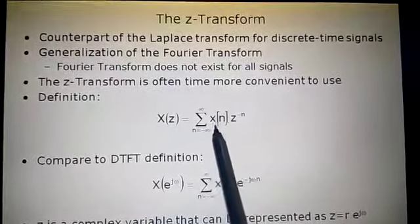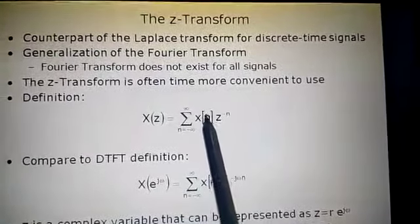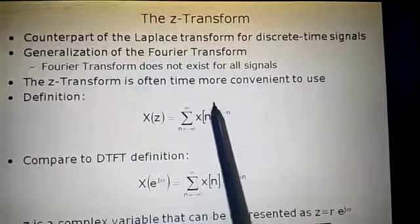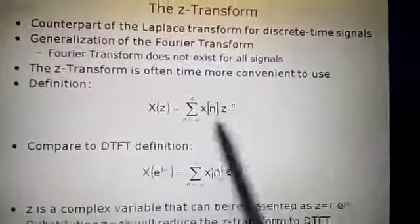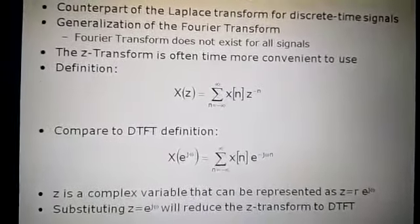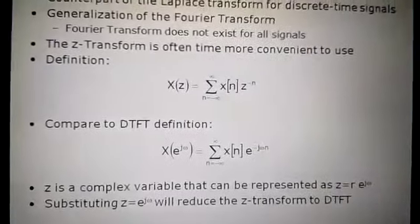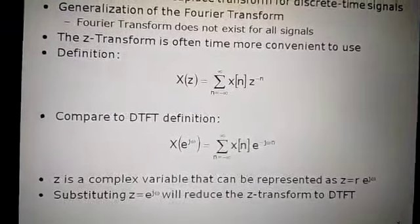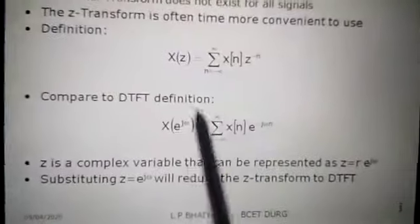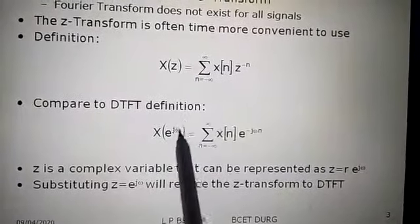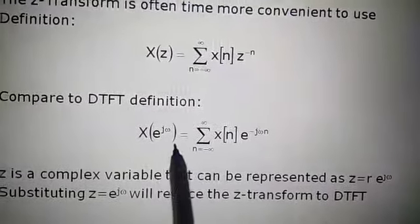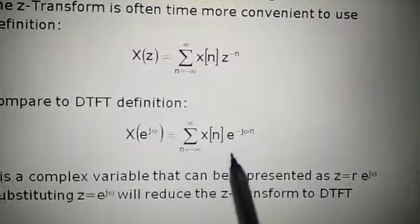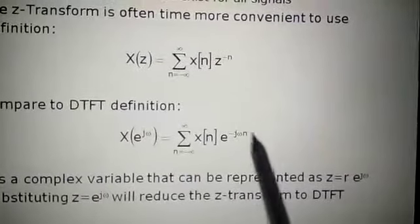We have different types of transforms. We use the Laplace transform in discrete time signals. Similarly, we use the Fourier transform in the frequency domain. Similarly, we use the Z transform in the frequency domain in the case of digital signal processing and signals and systems — it plays an important role in filters also. The DTFT, discrete time Fourier transform, is given by X(e^(jω)) = Σ (n = −∞ to ∞) x(n) · e^(−jωn).